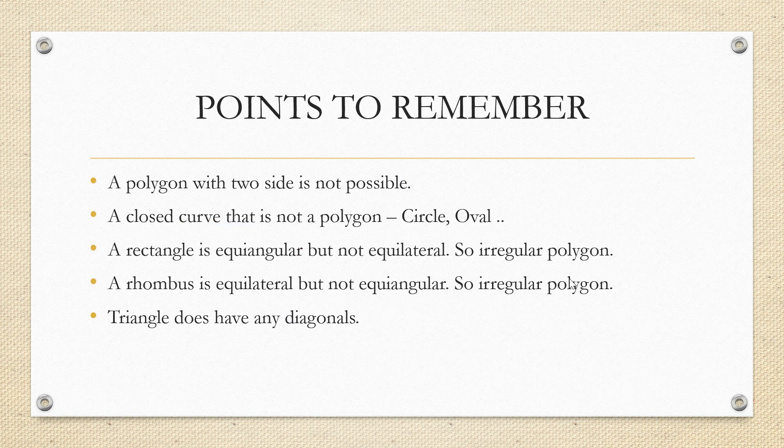Points to remember in this concept are: a polygon with two sides is not possible. The minimum number of sides required to form a polygon is 3. A closed curve that is not a polygon is a circle and oval. These are examples because these are formed using bent lines.